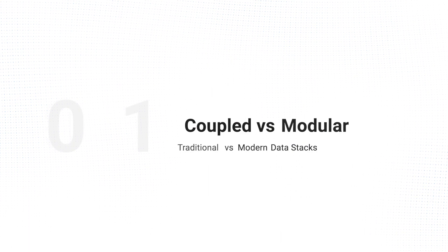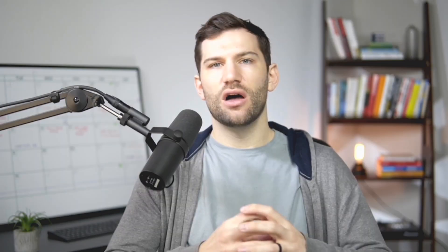While there are a lot of different views on this, today I want to break down three key differences between what's considered a traditional and modern stack, so that you can better understand at a high level what the difference is and form your own opinion. Number one: a traditional stack is typically seen as more closed off or coupled together, whereas a modern stack is more modular or individualized in its components.